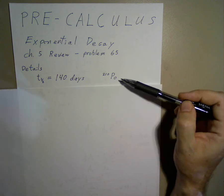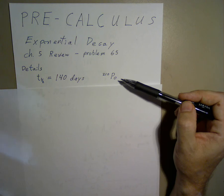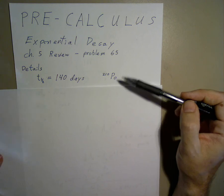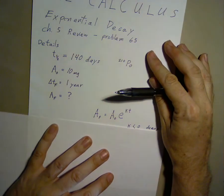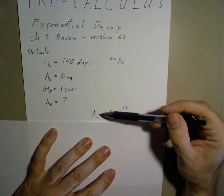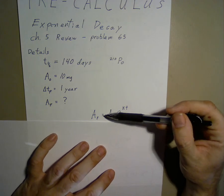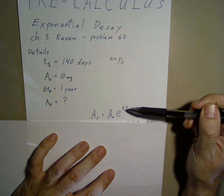The only important thing to realize is that polonium, well all radioactive materials, decay with an exponential decay rate. That means that they decay according to the function: a-final equals a-naught times e to the power of kt.